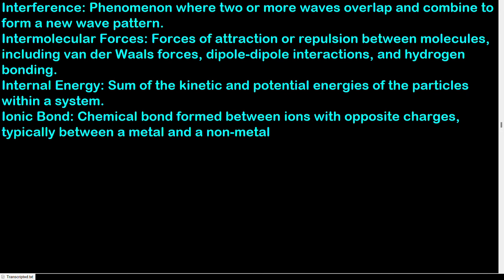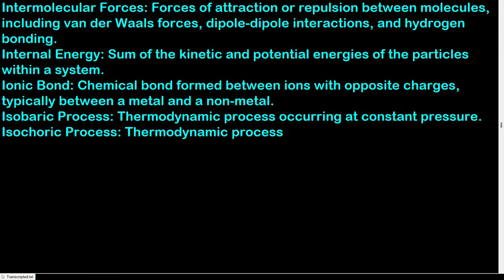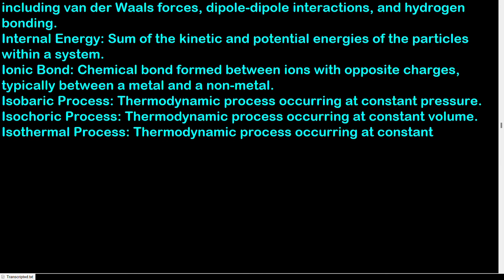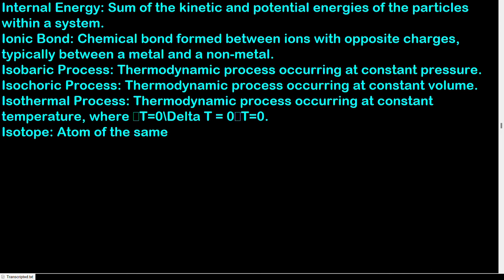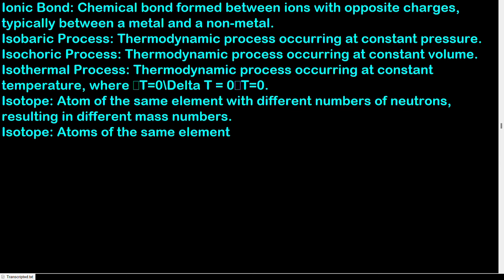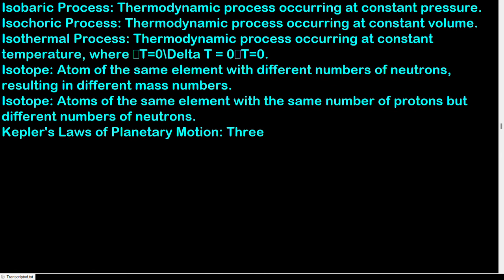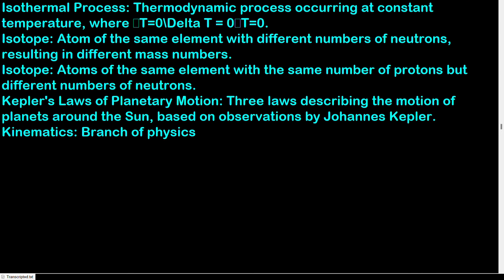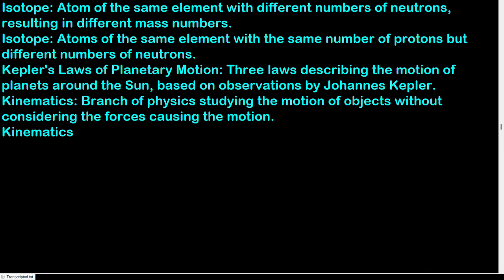Ionic bond: chemical bond formed between ions with opposite charges, typically between a metal and a non-metal. Isobaric process: thermodynamic process occurring at constant pressure. Isochoric process: thermodynamic process occurring at constant volume. Isothermal process: thermodynamic process occurring at constant temperature; ΔT = 0. Isotope: atoms of the same element with the same number of protons but different numbers of neutrons. Kepler's laws of planetary motion: three laws describing the motion of planets around the sun, based on observations by Johannes Kepler.